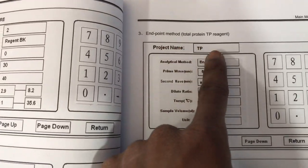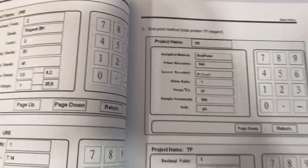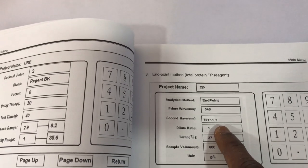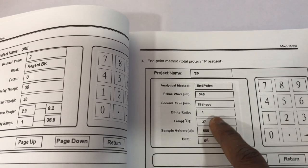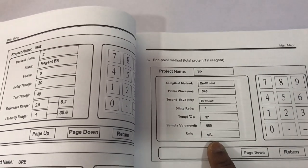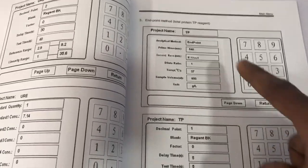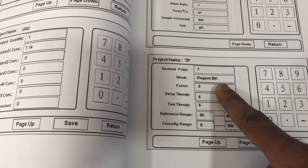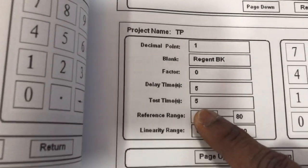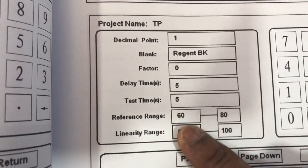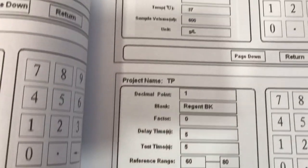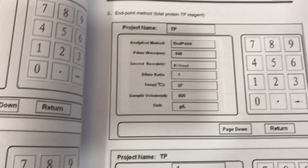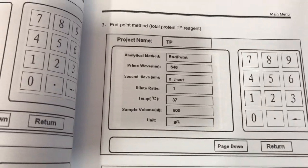Here is another endpoint method — total protein. The analytical method is endpoint. The primary wavelength is 546 nm; there is no secondary wavelength. Dilution is set to one. Sample volume is 600 microliters and the unit is g/L. On the second page, set the decimal point, do a reagent blank, and leave the factor at zero. The delay time and test time are both five seconds for an endpoint reaction. This is the reference range according to the manufacturer.